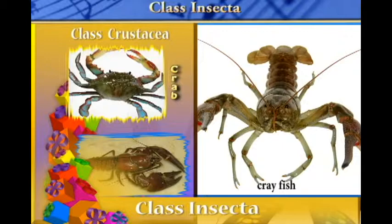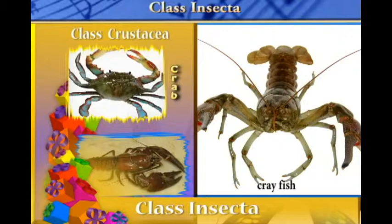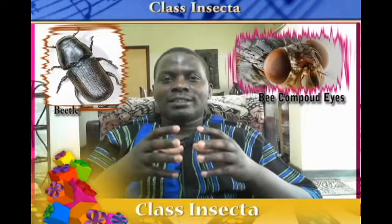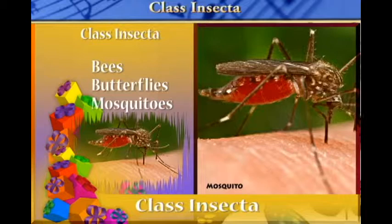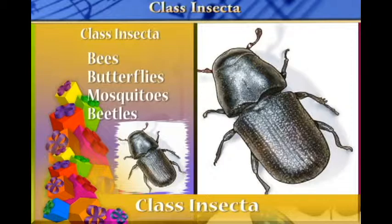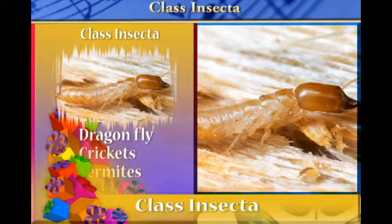Now we are going to focus mainly on class Insecta. Under this class we have organisms like the bees, butterflies, mosquitoes, the earwig, the beetles, dragonflies, crickets, termites, grasshoppers, and many other organisms.